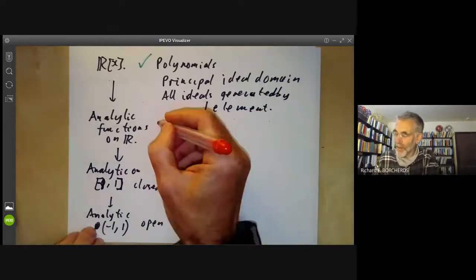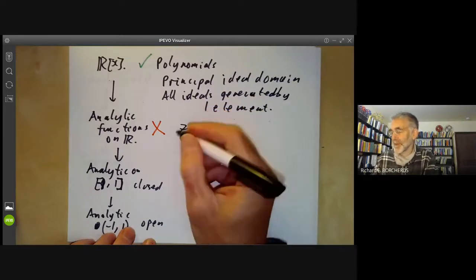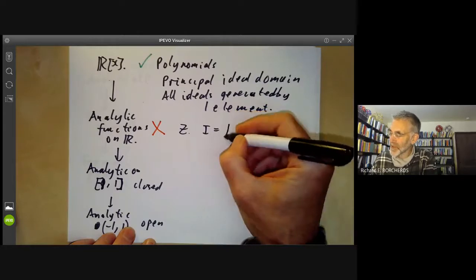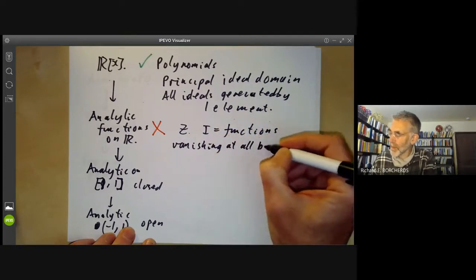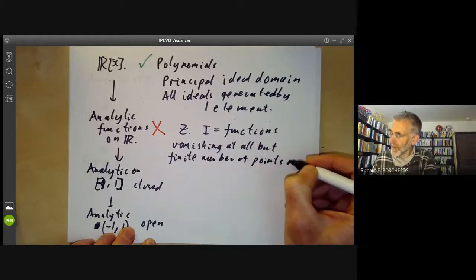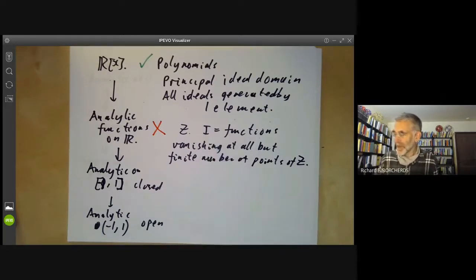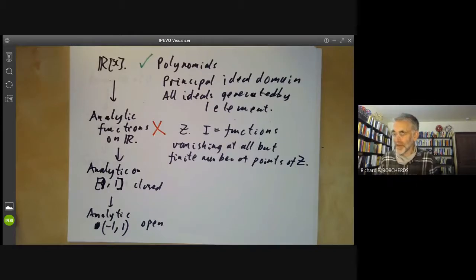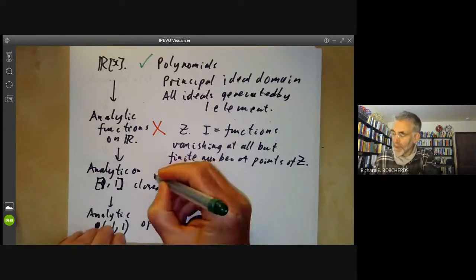Analytic functions on the reals are not Noetherian. We take a set Z with no limit points, and let I be the ideal of functions vanishing at all but a finite number of points of Z. This ideal is not finitely generated — there are functions vanishing at all but one point of Z, then functions vanishing at all but two points, and so on, giving an infinite strictly increasing chain. On the other hand, analytic functions on the closed interval [−1, 1] are Noetherian, because any analytic function on a closed interval has only finitely many zeros. We can write f as a polynomial times an analytic function with no zeros, which is a unit, and reduce to the Noetherian case of polynomials.